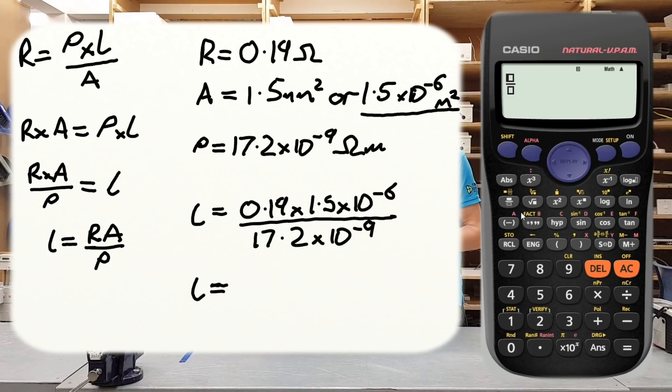So again, we can use this lovely fraction button. So if we put that in there, we can just put it in exactly as we've got it on our whiteboard. So we've got 0.19, so there's our resistance, times by the cross-sectional area of 1.5 times 10 to the minus 6, so there's our cross-sectional area in the base unit of meters squared now. And we're going to divide that by 17.2 times 10 to the minus 9, like that. So now if we hit the equals button we should get our answer back. Now it returns the answer in the form of a fraction because that's the simplest way of writing this number down actually, but if we push the SD button there, we can see it actually comes out at 16.569 and so on and so forth. So if we round this off now, we should be looking at about 16.57, so 16.6 meters basically. We can round this off to 16.6 meters.